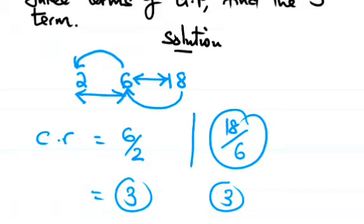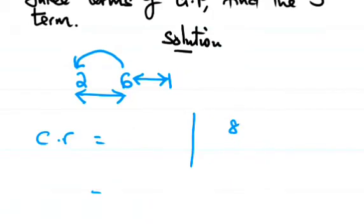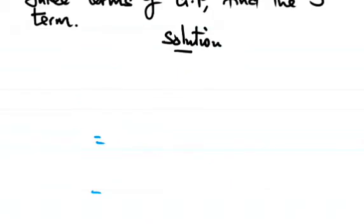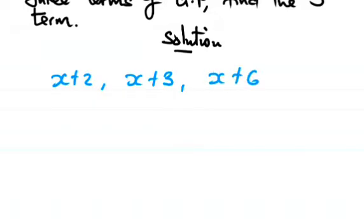Using this, we're going to apply the same methodology. So we have our sequence as x plus 2, x plus 3, and x plus 6. Now using this, we're going to divide our terms. The second term divided by the first should equal the third term divided by the second, giving us the same common ratio.